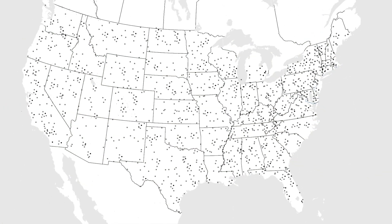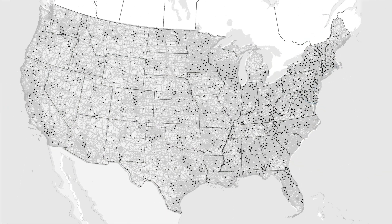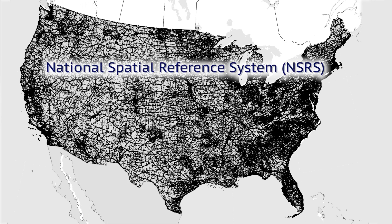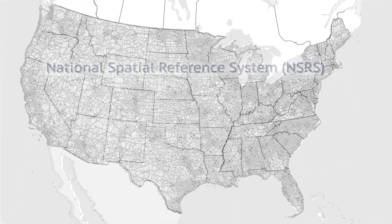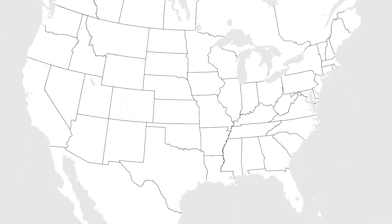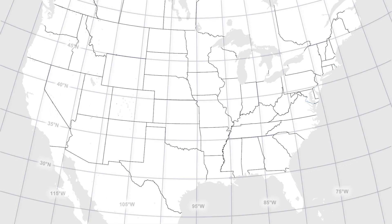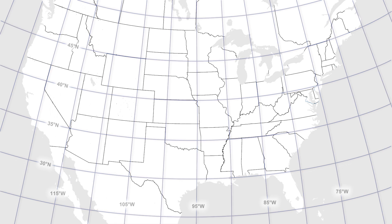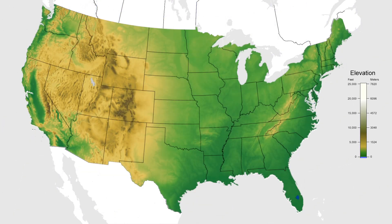And when we all use a network of these marks spanning the continent, we share one national spatial reference system. For many decades, we have had two types of nationwide datums in the United States — horizontal and vertical — and they were generally separate from one another.